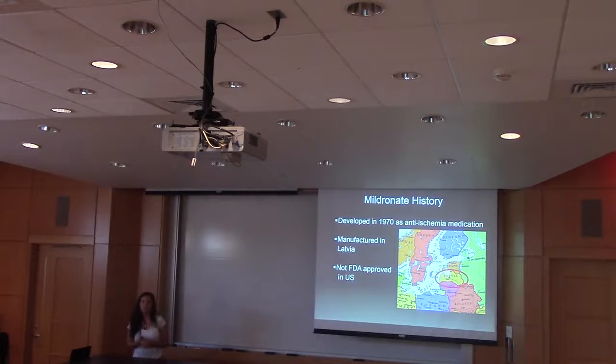So about the history of meldonium. It was actually created in 1970 as an anti-ischemia drug. And anti-ischemia, or ischemia itself, is basically just a decreased blood flow through your body. So this drug helps increase that blood flow and increase that oxygen throughout your entire body. It helps keep things moving smoothly. And it's manufactured in Latvia, as you can see here. There's a lot of barriers between Sweden and Poland and Russia and Germany and that kind of Baltic Sea region. And you probably haven't heard about this drug before because it's not actually FDA approved in the United States.